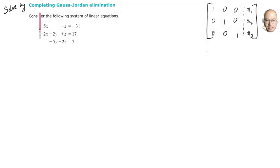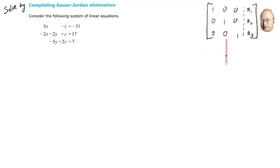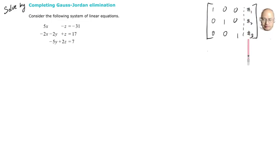Let's solve a system by completing Gauss-Jordan elimination. Remember in Gauss-Jordan elimination our goal is to get these leading ones in this staircase pattern, and then over here it'll be nice to get either numbers or variables depending on the actual problem.